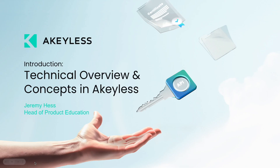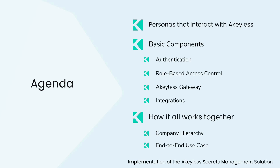Hi, my name is Jeremy Hess with Akeyless, and in this video I'm going to review the basic elements of the Akeyless Secrets Orchestration platform, as well as how the solution can be implemented within an organization. The topics we will cover include authentication, role-based access control, the Akeyless Gateway, and integrations, all meant to allow you to interact with the secrets stored in Akeyless. I will also explain how these pieces all work together for organizational implementation of the platform.